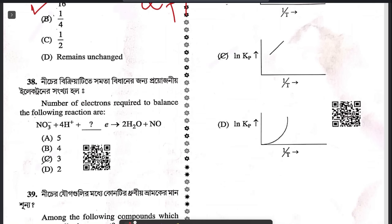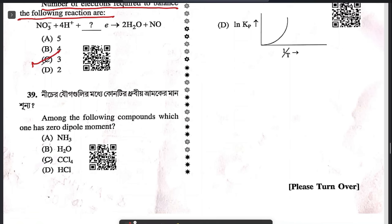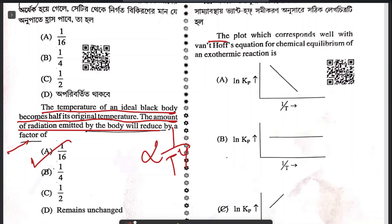Question 38: the number of electrons required to balance the following reaction — the only possible answer is C. Question 39: among the following compounds, which one has a zero dipole moment? CCl₄. All others have a positive dipole moment.